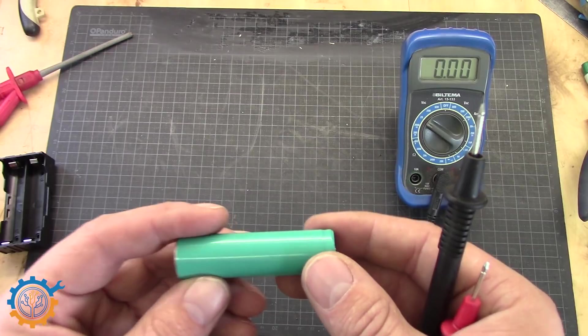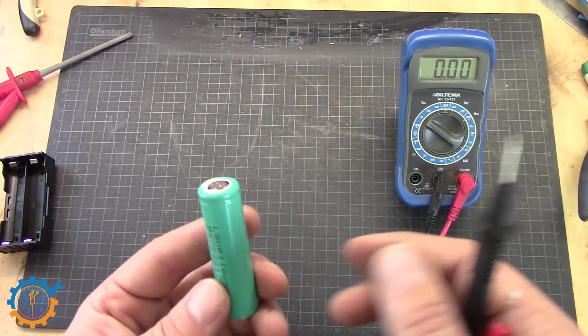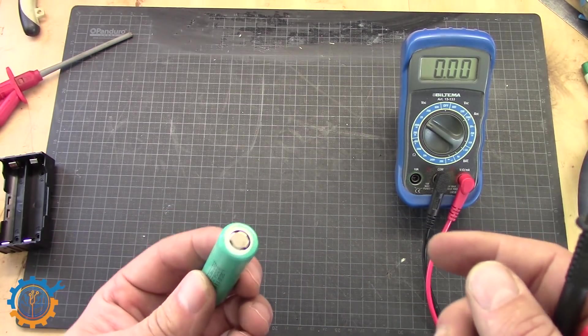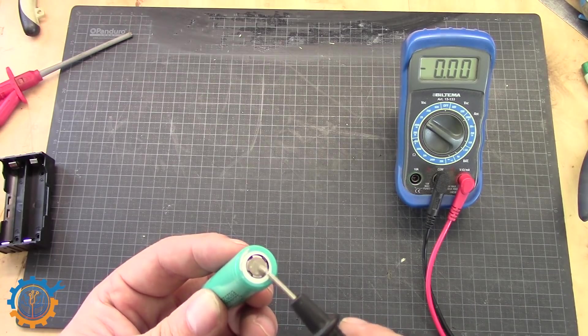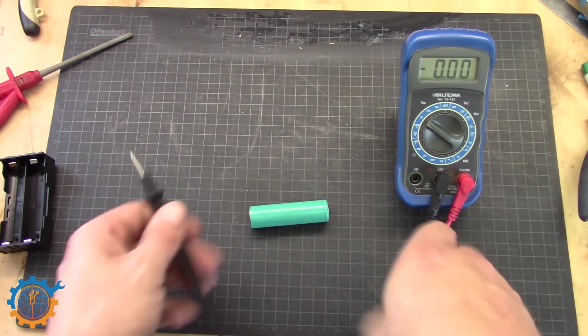And that can be done for instance by overcharging or heating the cell. This CID here will disconnect the positive side. For instance, this cell here. As you saw earlier, we were not able to charge this cell at all.